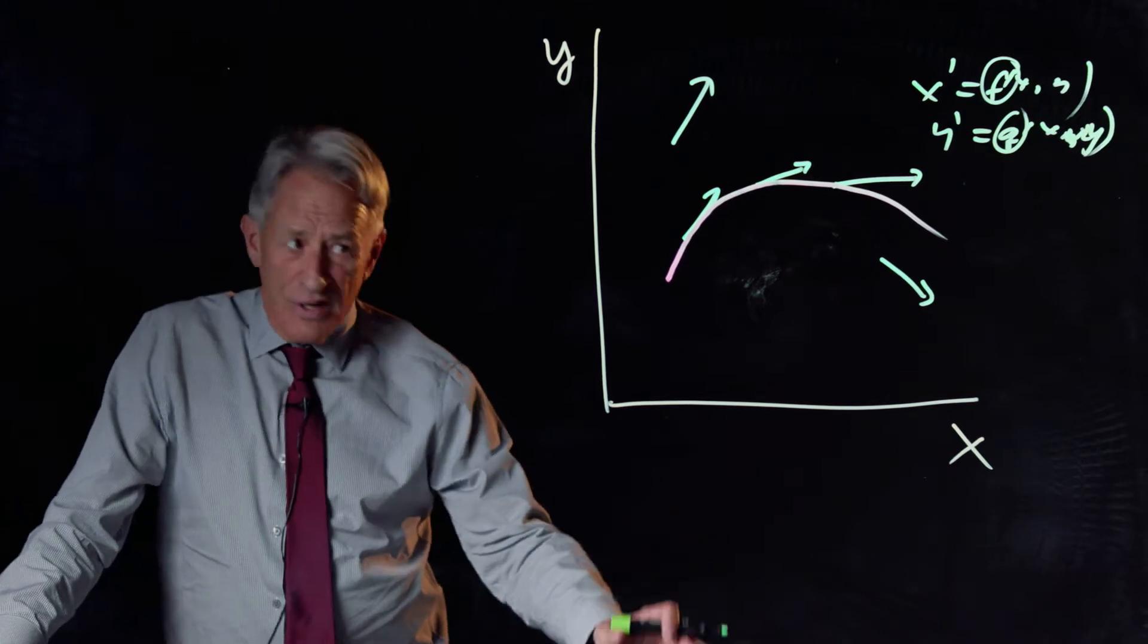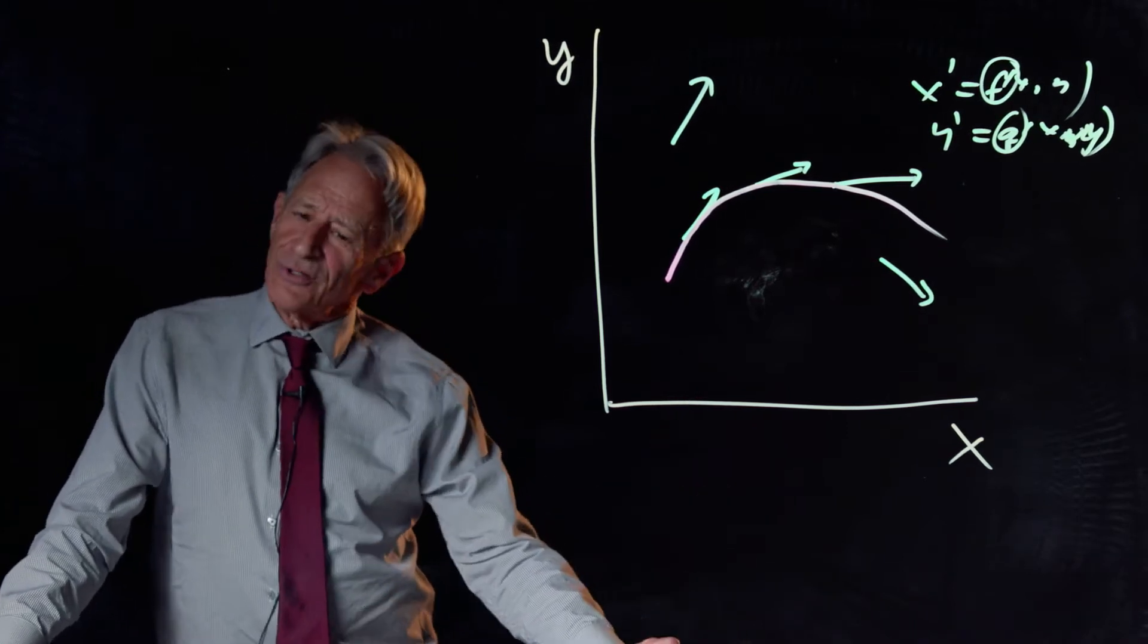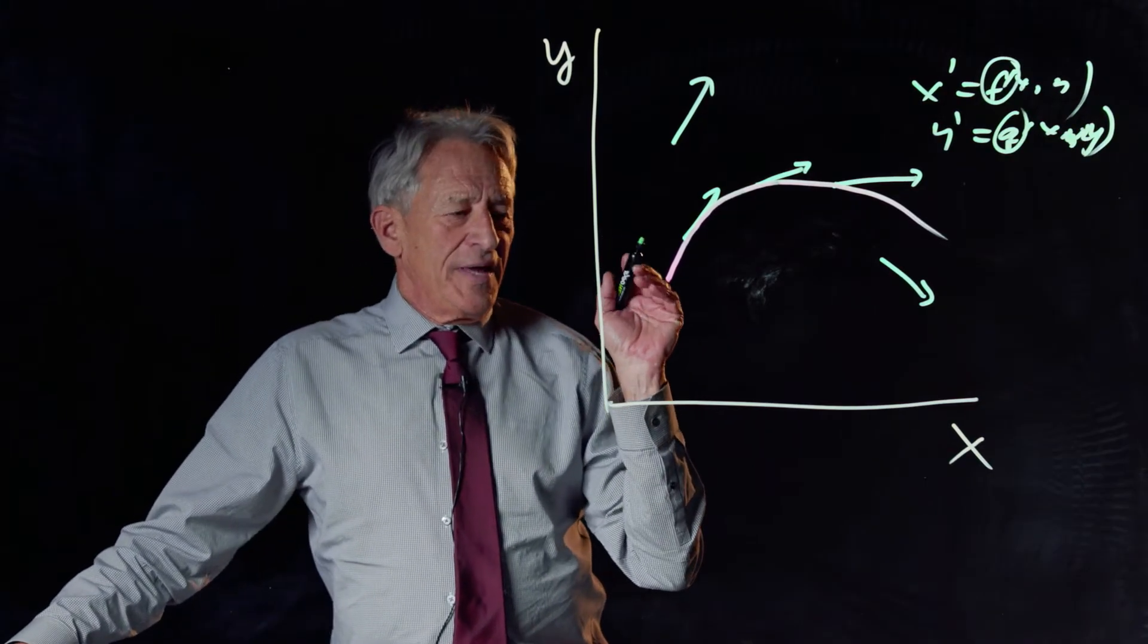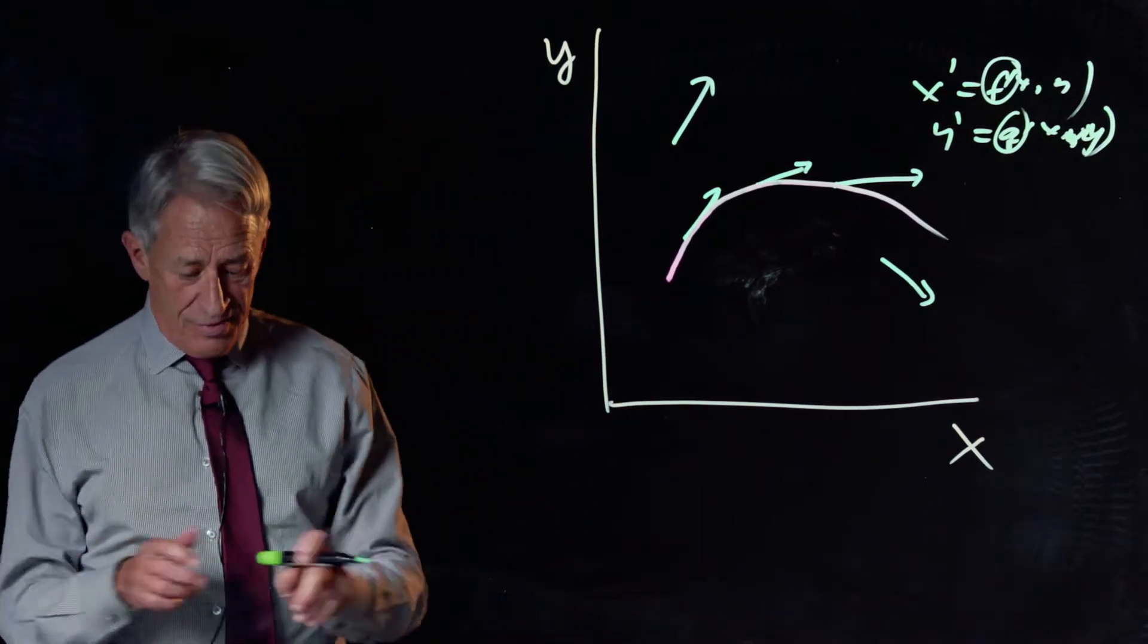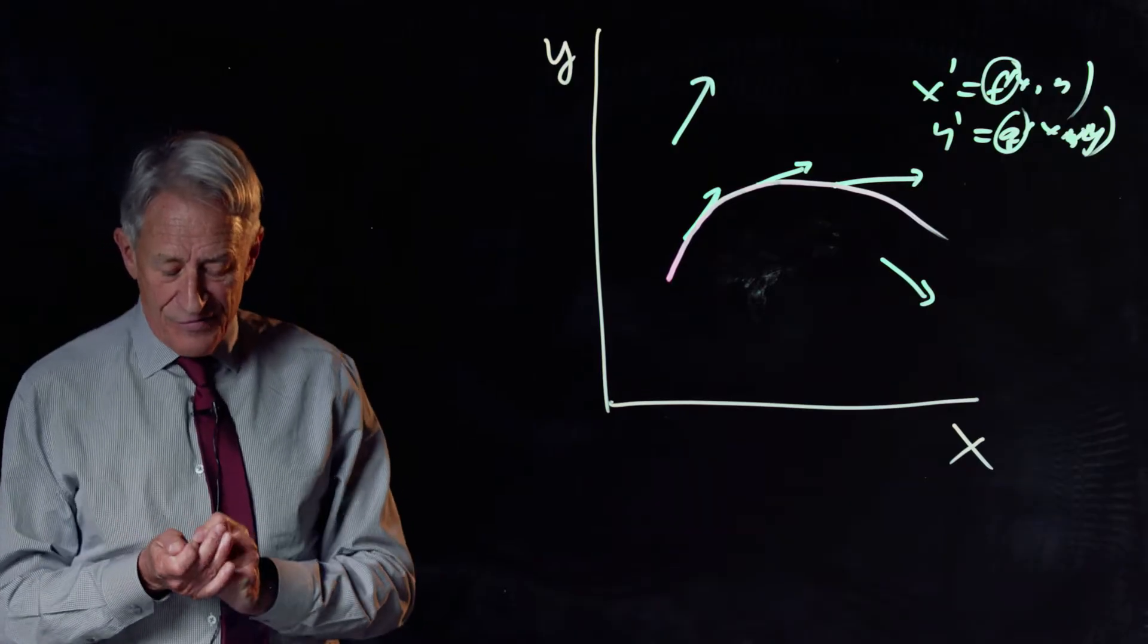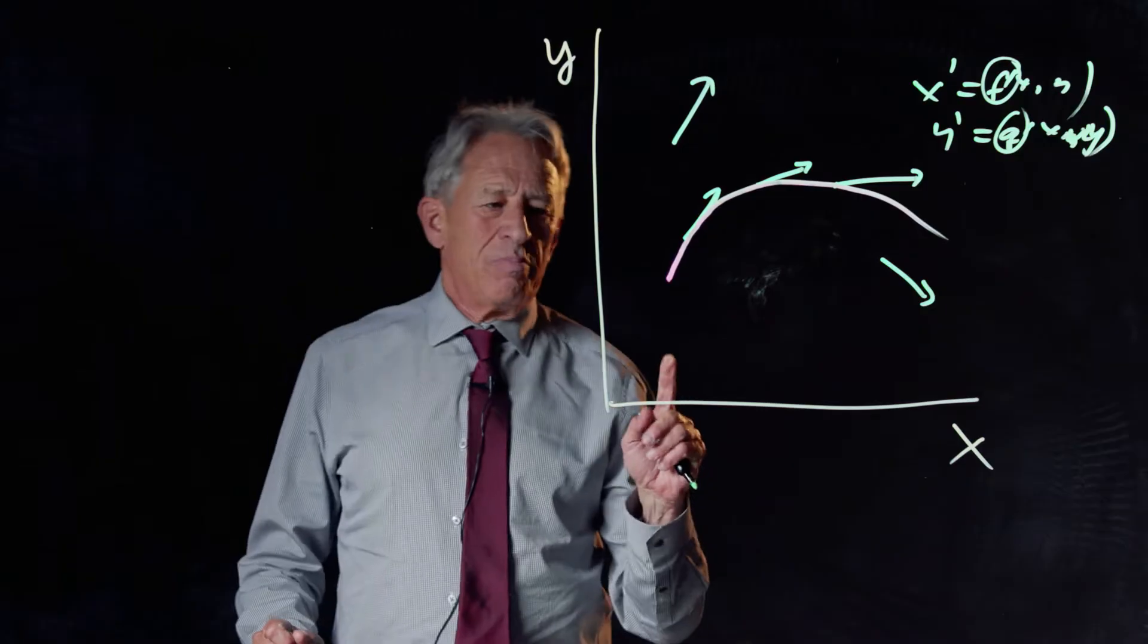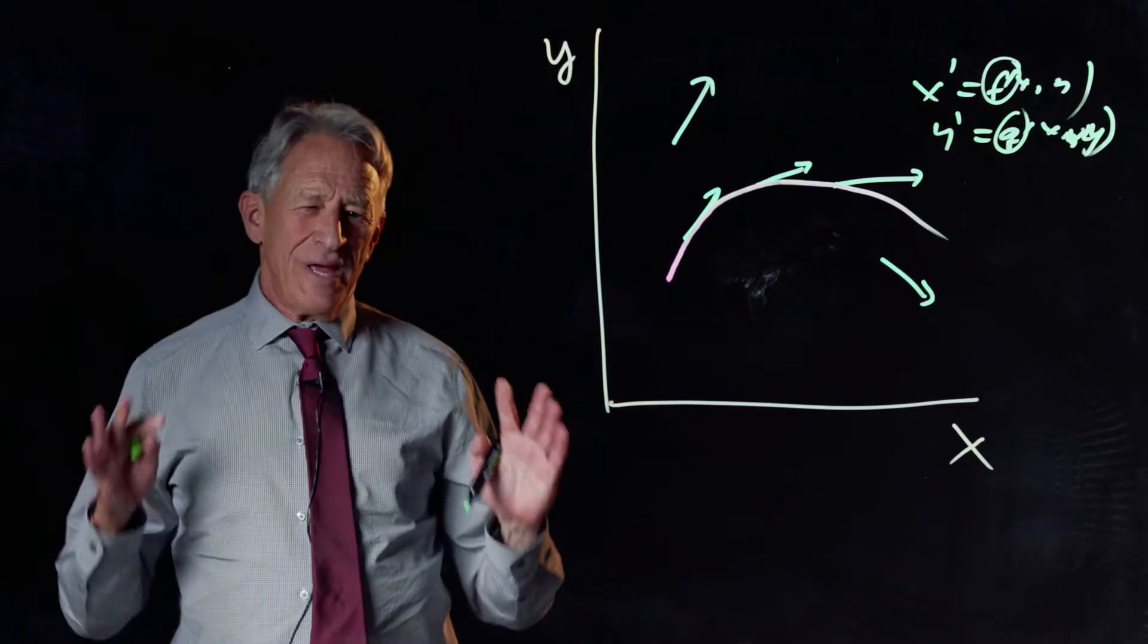And so the question is, what's a girl to do? And the answer is provided, and this is the last key piece of structure, the answer is provided by an approximation method.